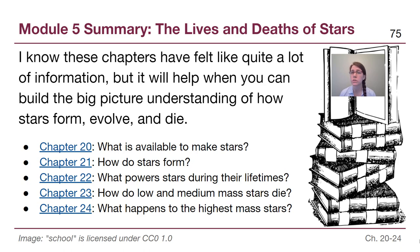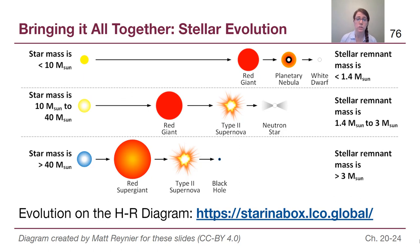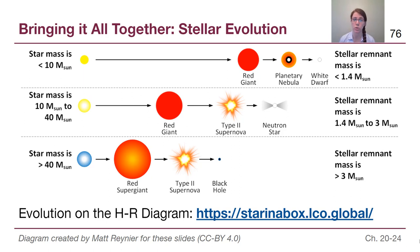It is all one single story, and this slide helps us see in one diagram how that story is connected. For low mass stars — meaning stars less than about 8 or 10 solar masses — they live the longest. They will form a red giant when they leave the main sequence, their outer layers will create a planetary nebula, and they will leave behind a white dwarf whose mass is below the Chandrasekhar limit of 1.4 solar masses.